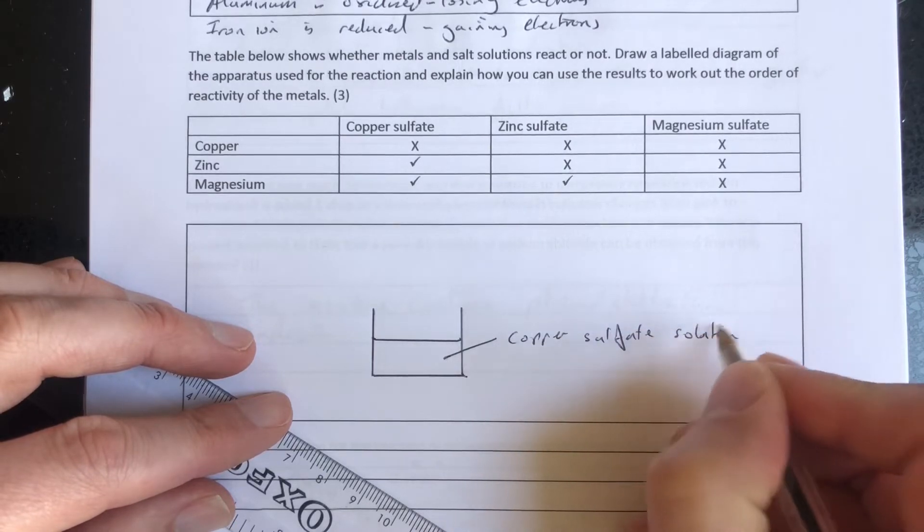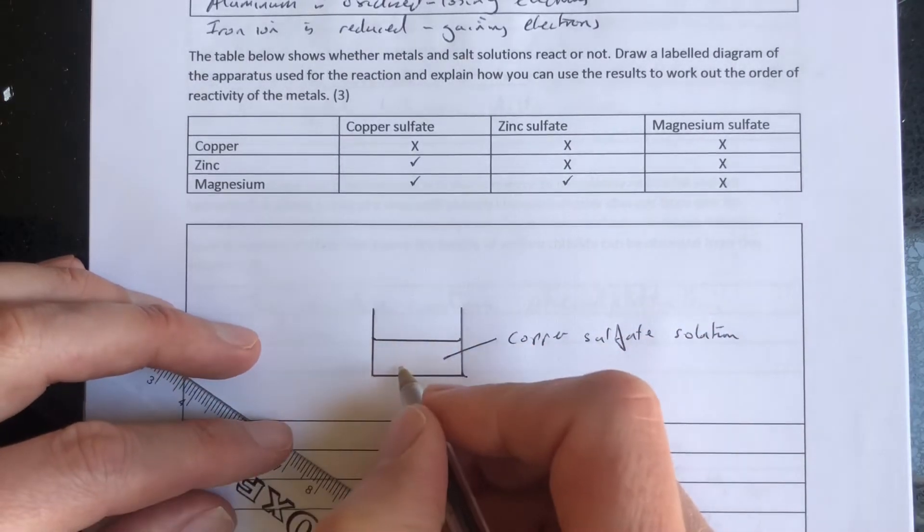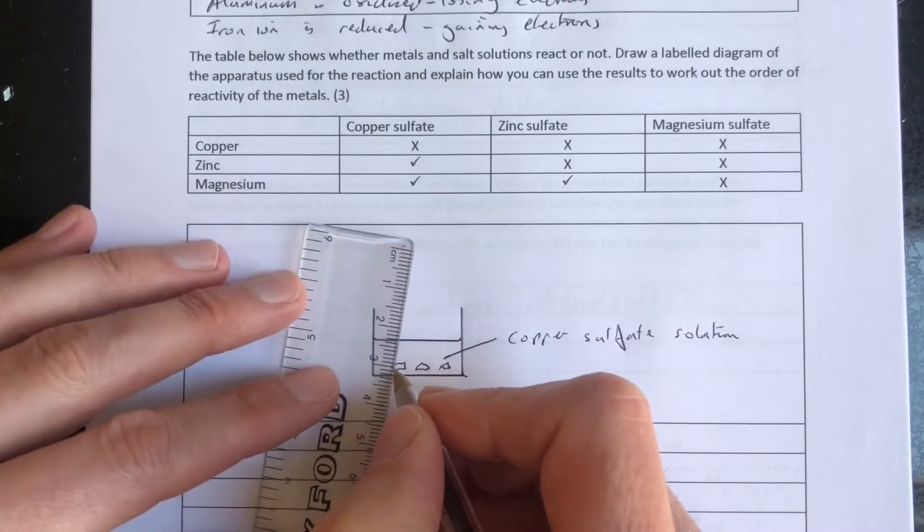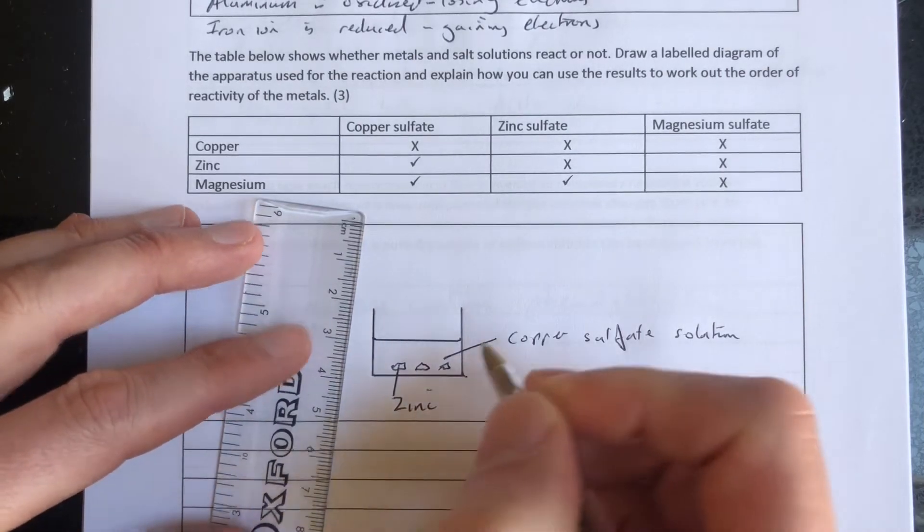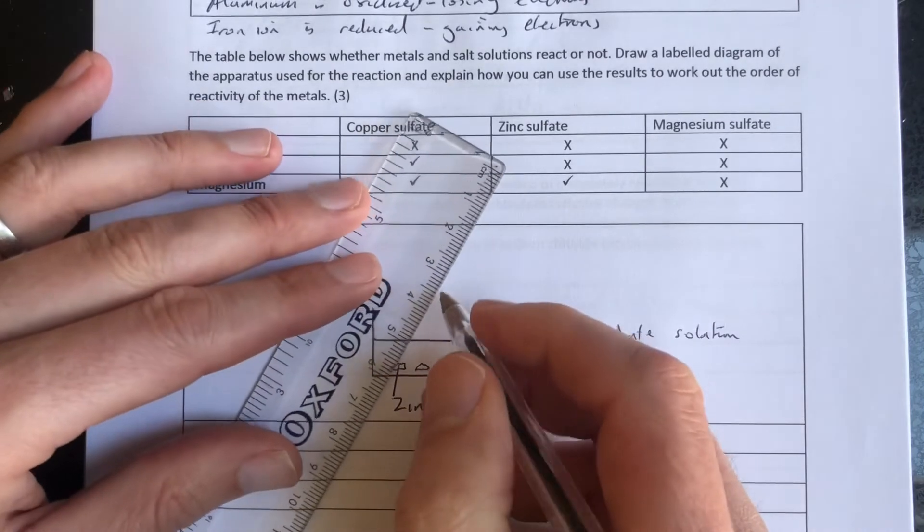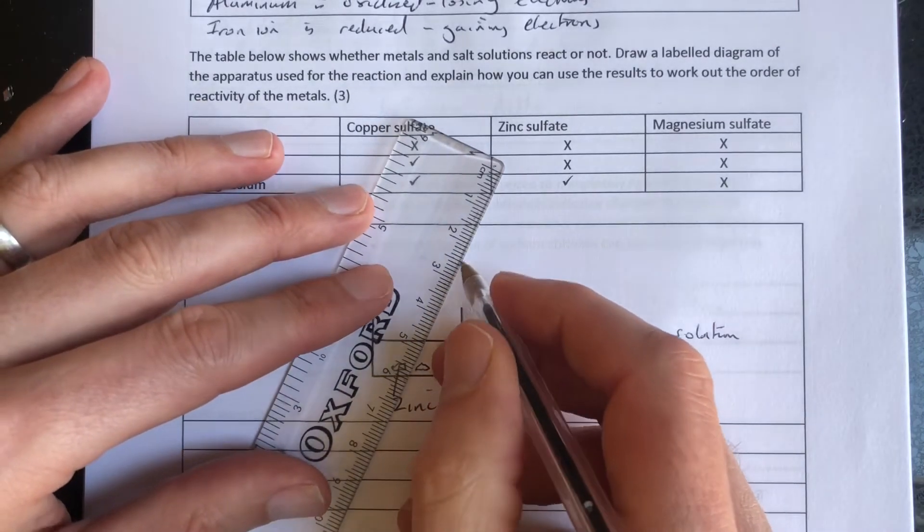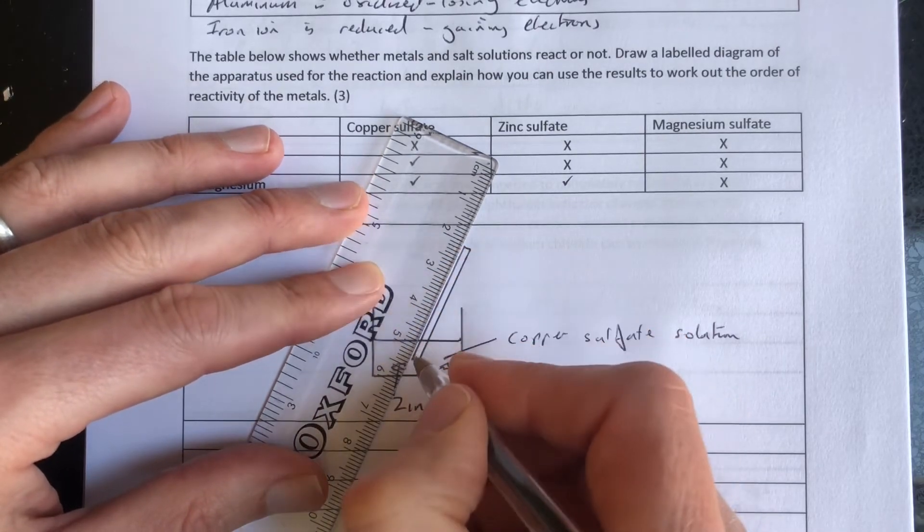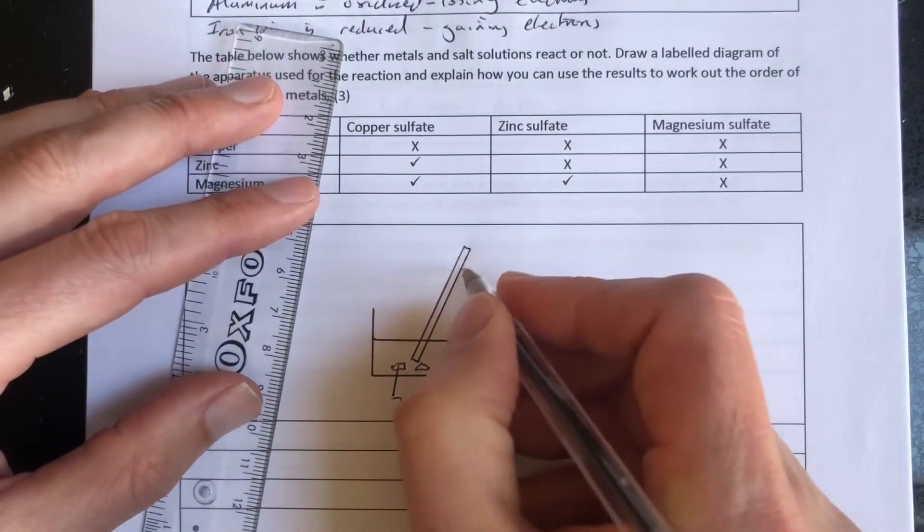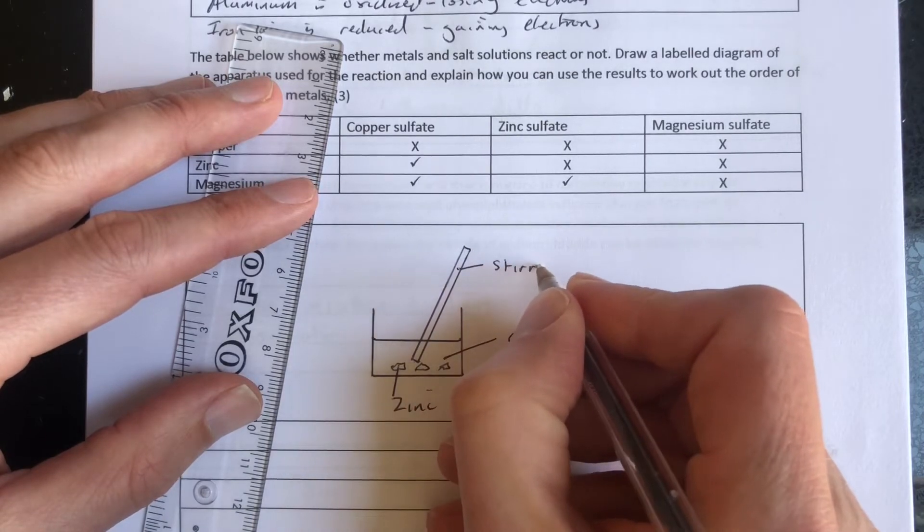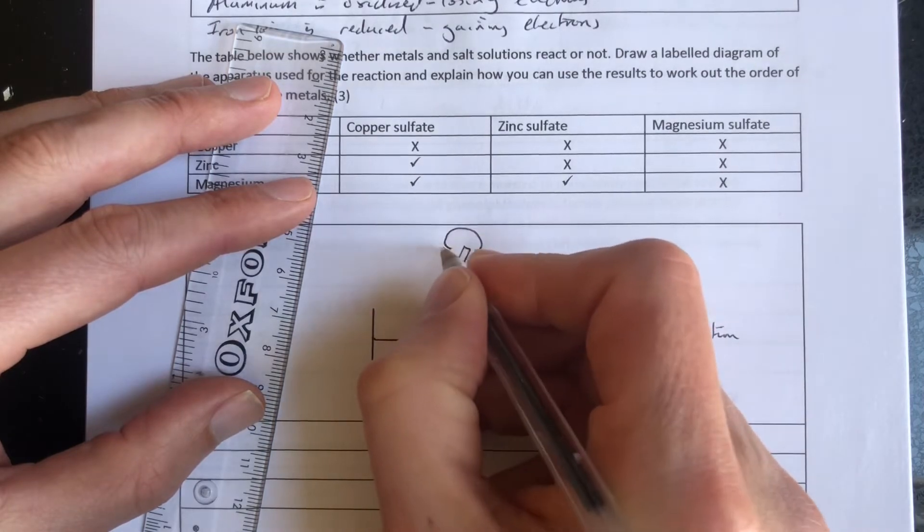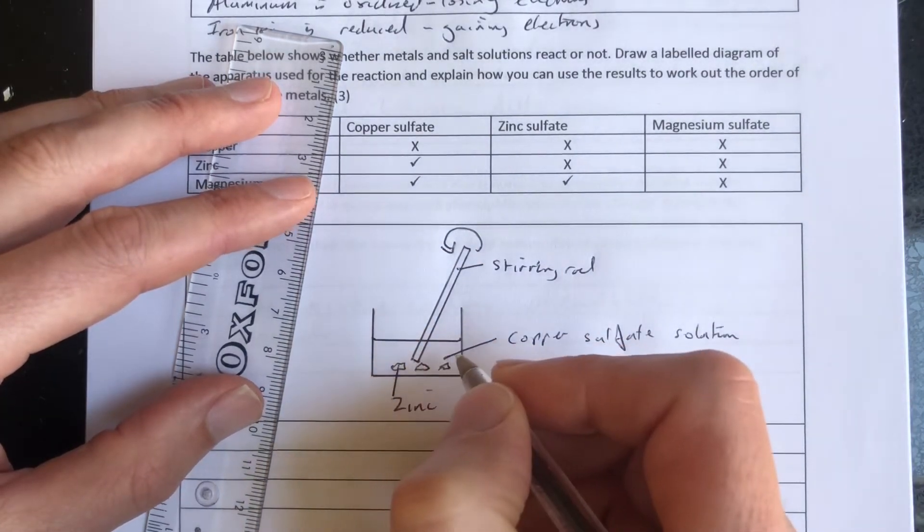And then we're going to put the metal in there. So we have some zinc granules at the bottom here. This is the metal here, the zinc. So we're taking a metal and reacting it with a different metal salt solution. And we're going to need to stir that. So this is going to be our stirring rod.